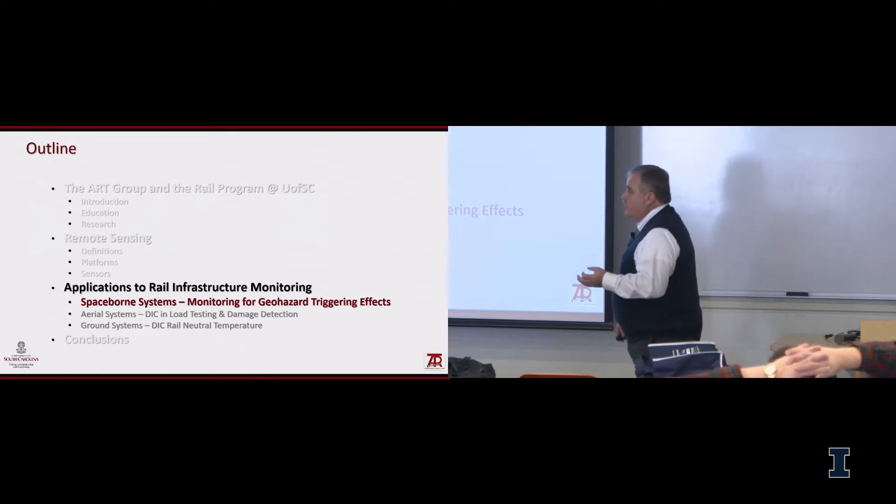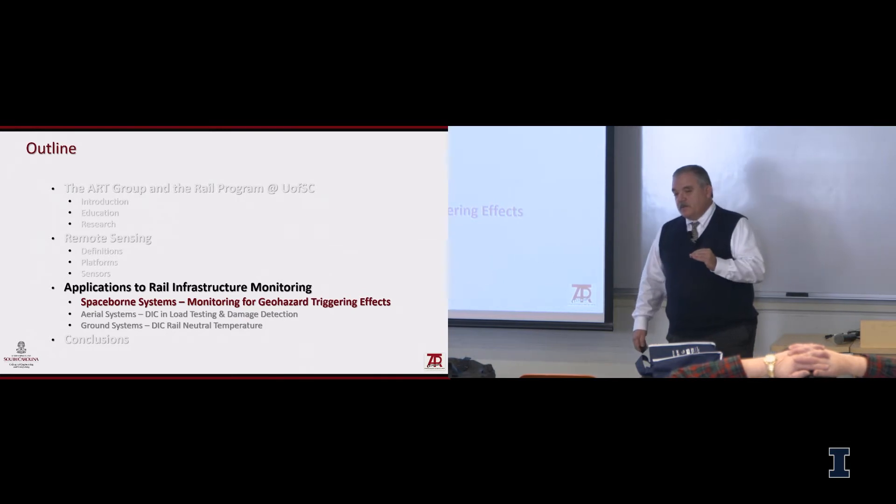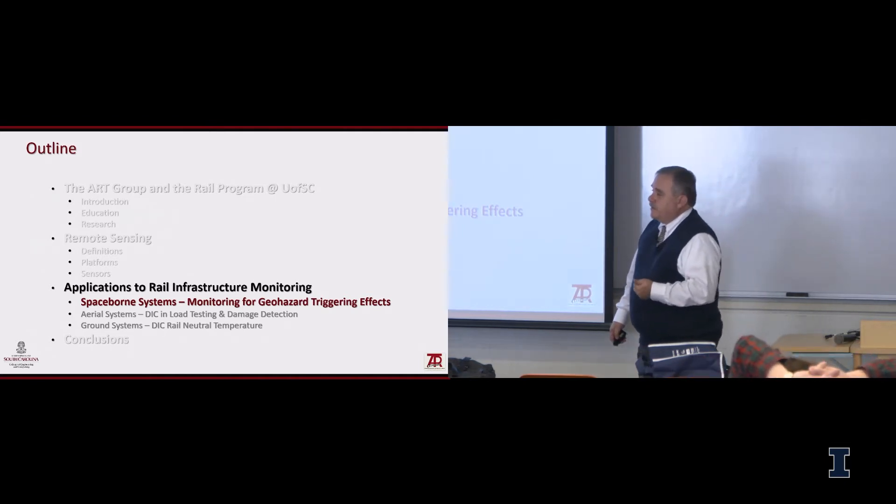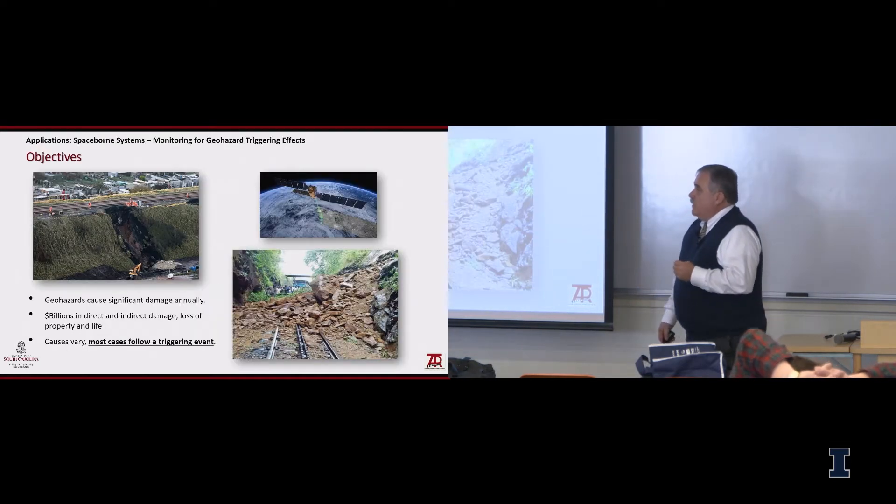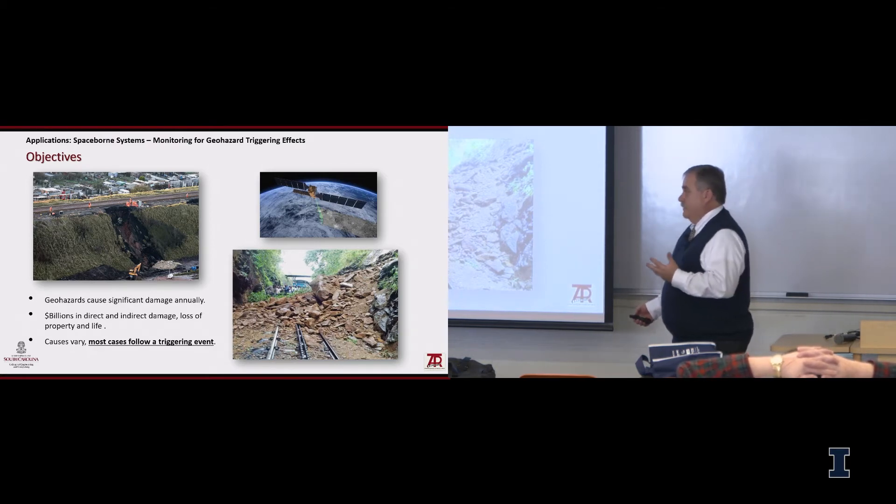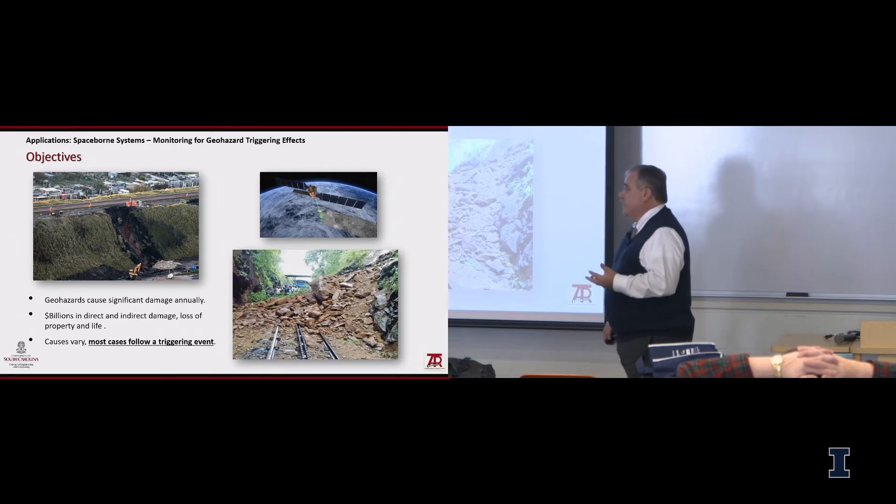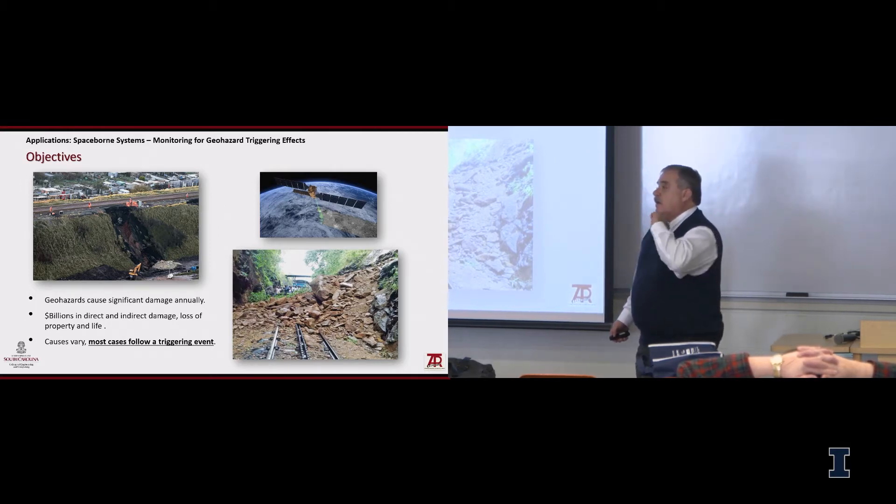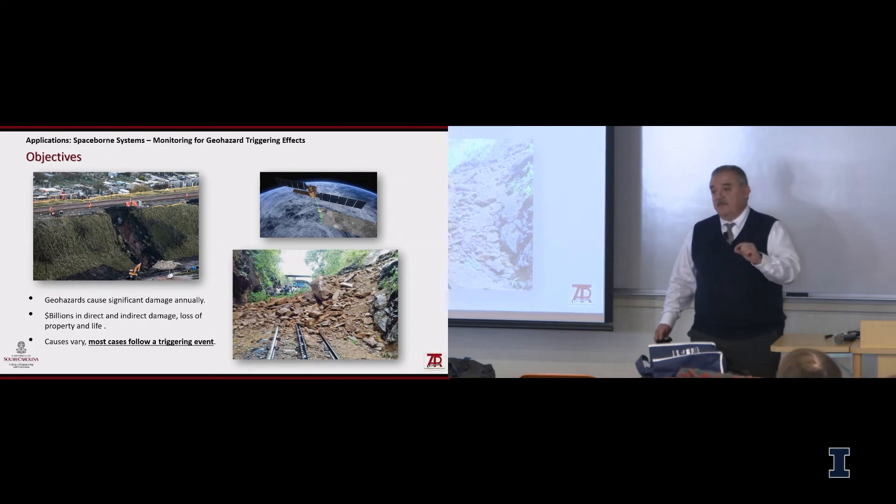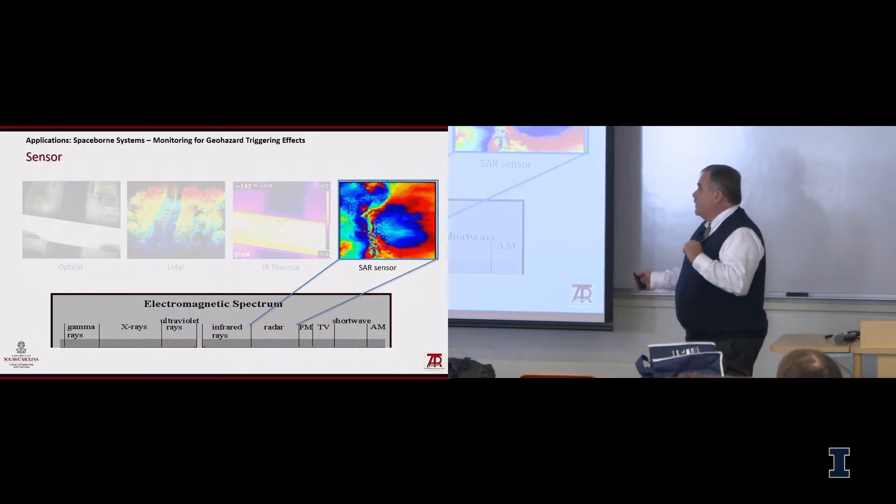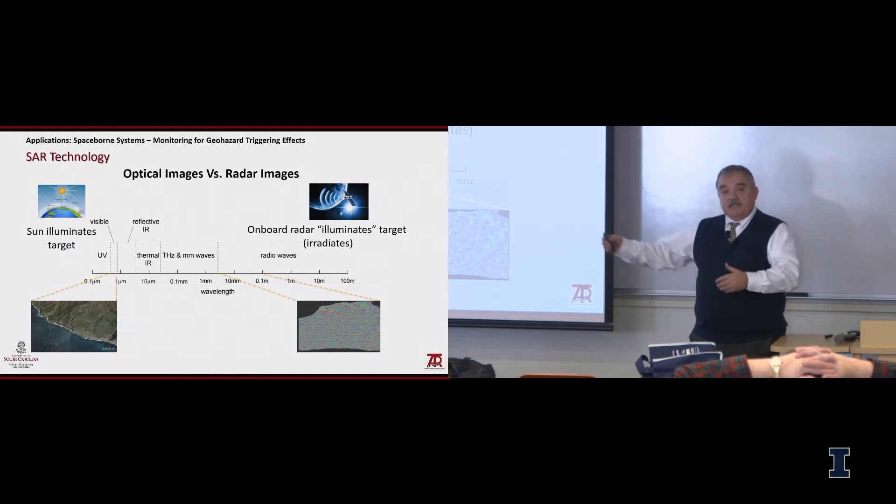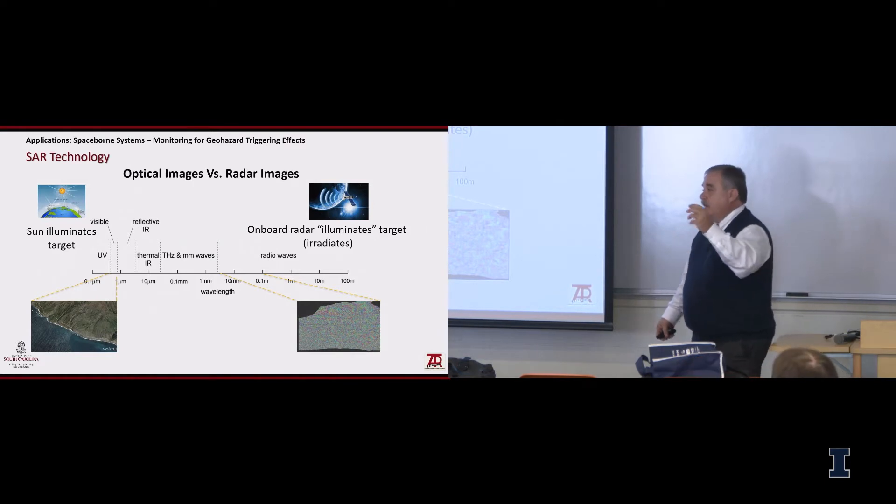Moving into the applications, let's talk about space-borne systems first. The implementation was in monitoring effects that trigger geo-hazards, like landslides on the right-of-way of the railways. This was a project funded by University Transportation Center. The objective here is to do something with the landslides, because they cause significant damage annually in the order of billions. The hypothesis is that because most cases follow a triggering event, we can detect these triggering events using satellites. For this, we're using the SAR sensors, synthetic aperture radar sensors, which operates on the radar frequency of the electromagnetic spectrum. What's the difference of this sensor with the optical? Well, when we take a picture, we need sunlight or some sort of artificial light to illuminate the target before we take the picture. With radars, the sunlight or artificial light is not strong enough to get a signal back. With radar signals, we irradiate the object with radar waves, waves in the radar frequency, and the sensor picks up reflections.